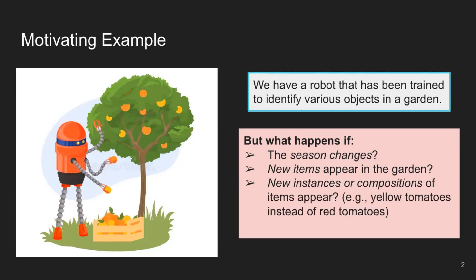Another thing that could happen is we have new instances or compositions of items appearing. Maybe at some point in the garden we had red tomatoes, but now we have yellow tomatoes. Is our agent able to identify the concepts of yellow and tomato and put those two things together to be able to identify the new yellow tomatoes? And there's a lot of other things that you could imagine are really important.